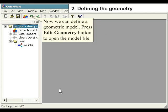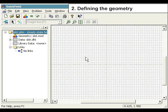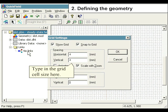Now we can define a geometric model. Press Edit Geometry button to open the model file. It is more convenient to set the value of grid spacing to 4mm. Do it under the Edit menu and select Grid Settings. Type in the grid cell size here.